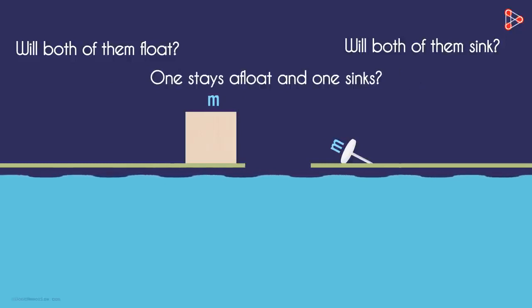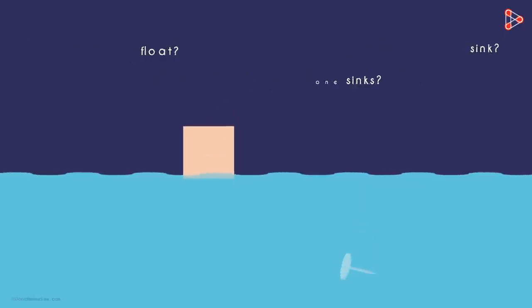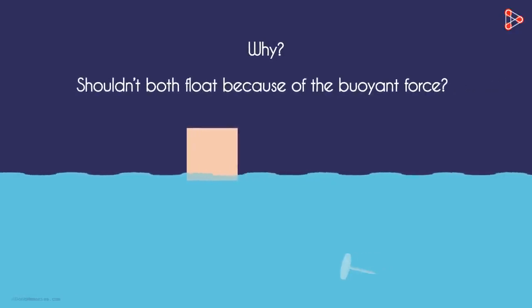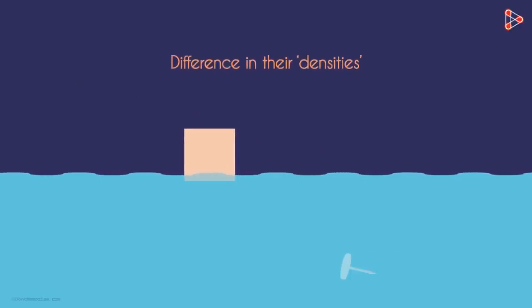Just by intuition, we can say that the wooden block will float and the metal pin will sink. But if they are of the same mass, why does that happen? Shouldn't both float because of the buoyant force? This happens because of the difference in their densities.